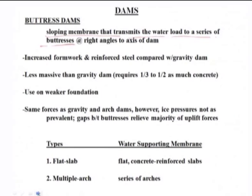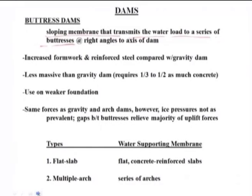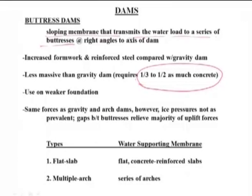Buttress dams require only one third to one half as much concrete as gravity dams and are used on weaker foundations. The forces acting are essentially the same as for gravity and arch dams, except ice pressure is not as prevalent, and gaps between buttresses relieve the majority of uplift forces.